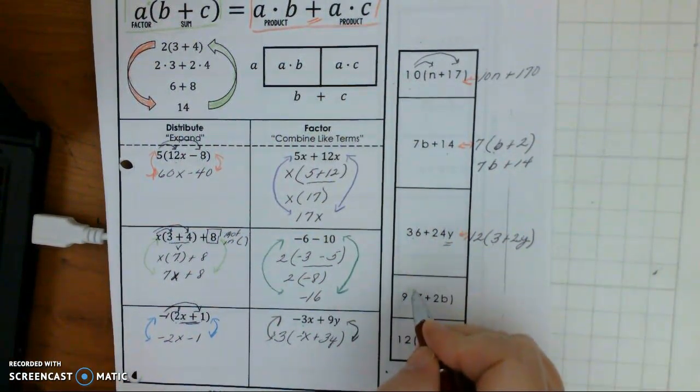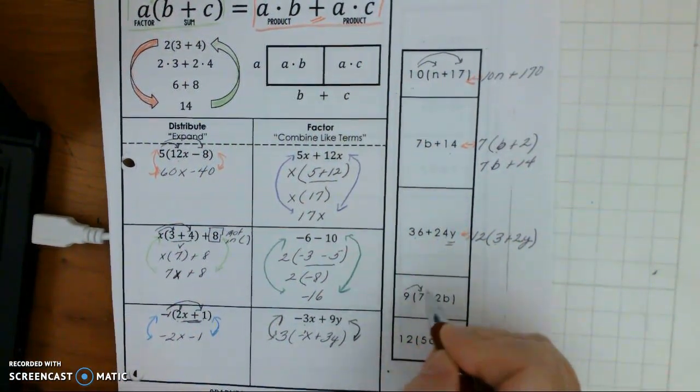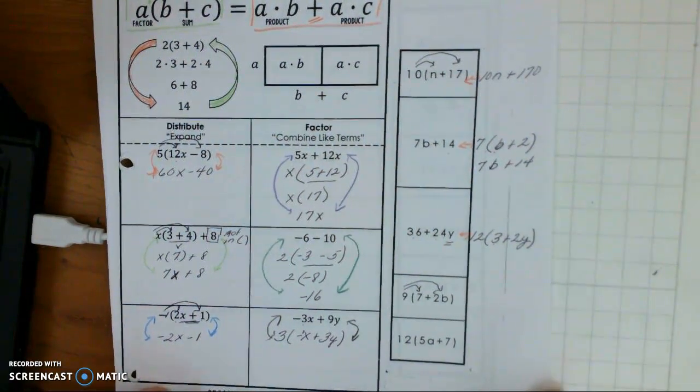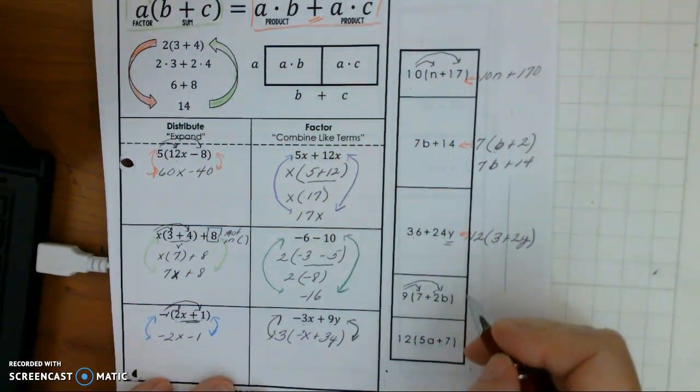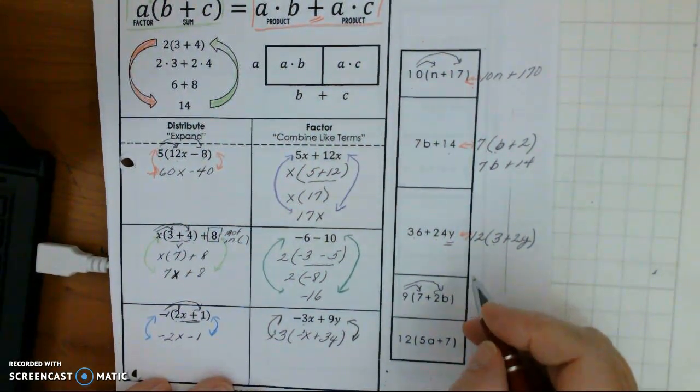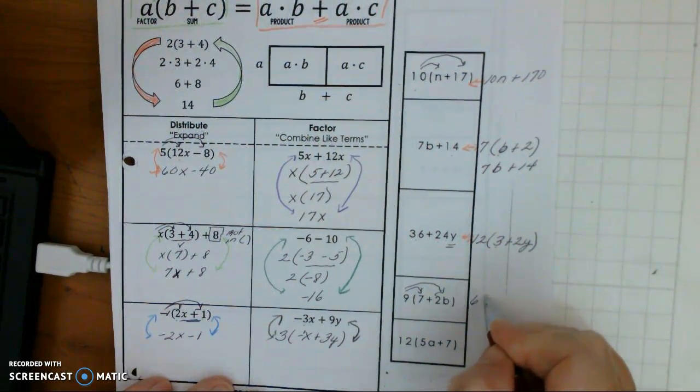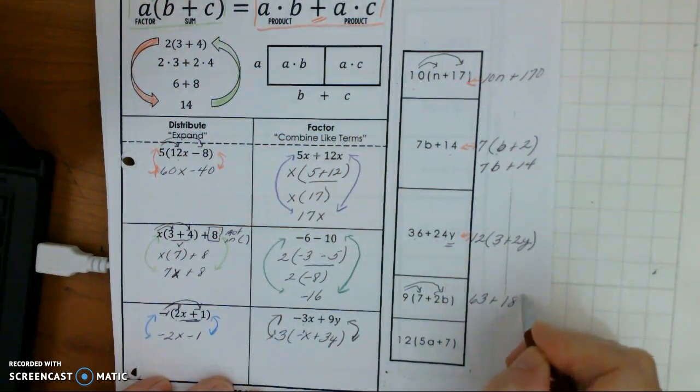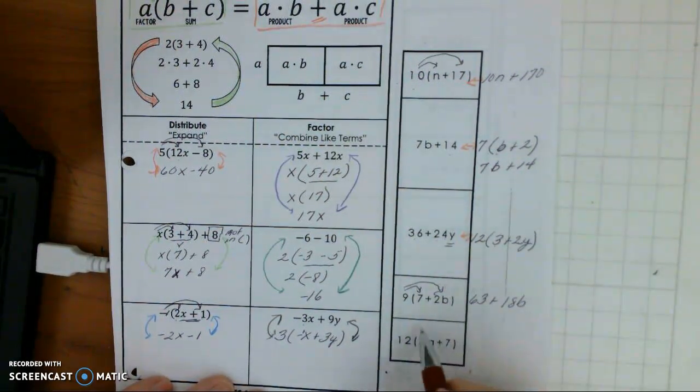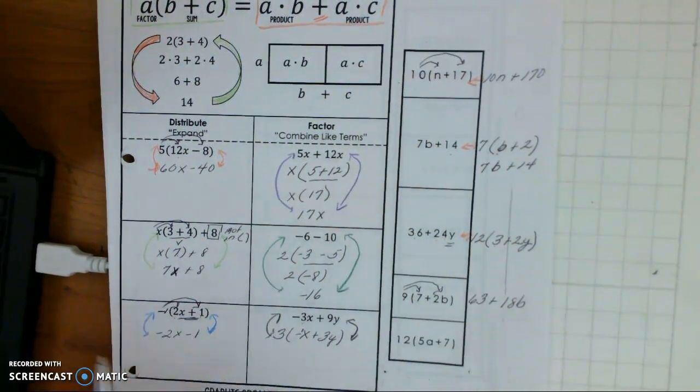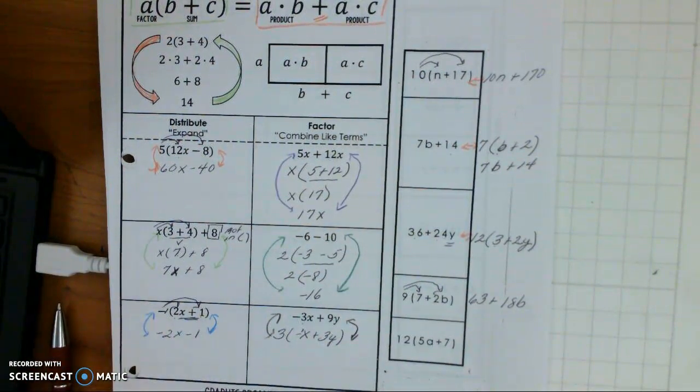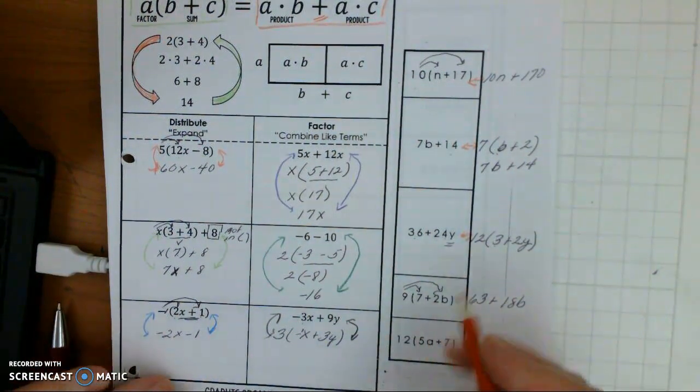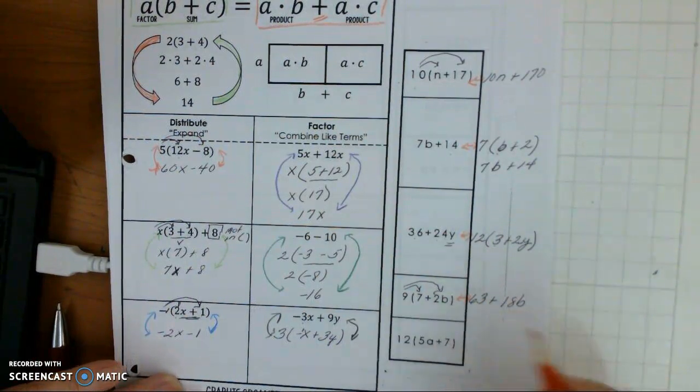Now, this one's like the distributive property. 9 times 7, 9 times 2b. I'm sorry. I'm trying to keep my hand out of the way. 9 times 7 is 63 plus 9 times 2 is 18b. So, again, these are equivalent expressions.